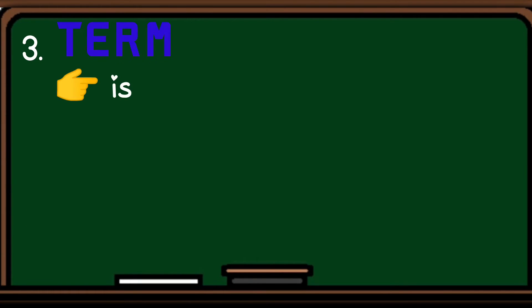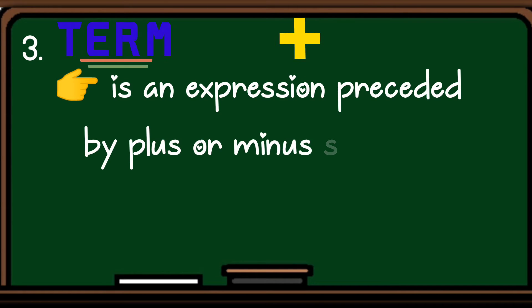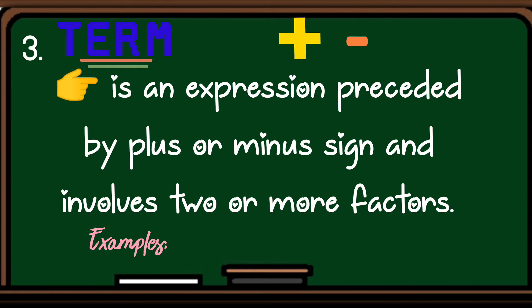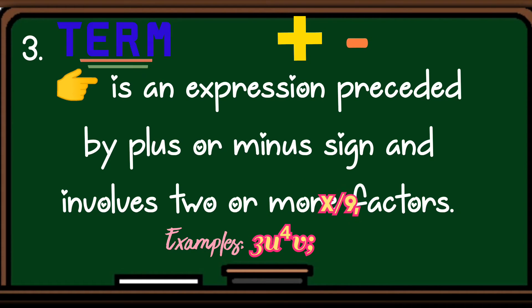Number three, a term. A term is an expression preceded by a plus or minus sign and involves two or more factors. May tinatawag kasi tayong one term, two terms, so on and so forth. Examples, 3u to the fourth power v, x over 9, 6, and y.